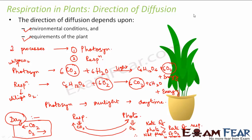Now, what happens at night? At night there is no sunlight, therefore no photosynthesis. So only respiration takes place at night. In respiration, oxygen is utilized and CO2 is produced. This CO2 which is produced is diffused to the environment. So the extra carbon dioxide produced is diffused to the environment at nighttime.